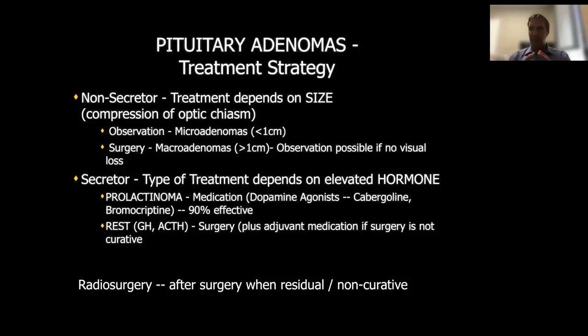There are cases where surgery might be considered for prolactinomas when patients don't tolerate medication. It's important to remember prolactinomas are treated with medication as the first line, with exceptions. For growth hormone adenomas causing acromegaly and ACTH adenomas causing Cushing's disease, surgery is the first line of treatment. Medication is used only to improve symptoms before surgery to optimize patients. If they are not in remission after surgery, they will need medication afterward.